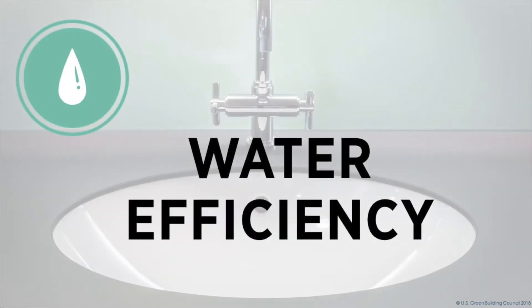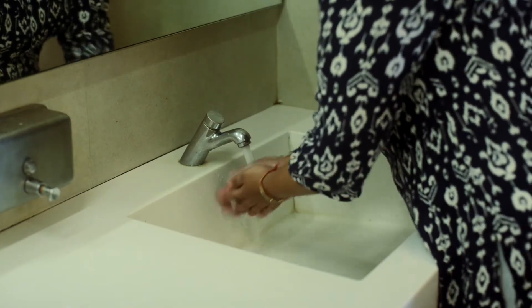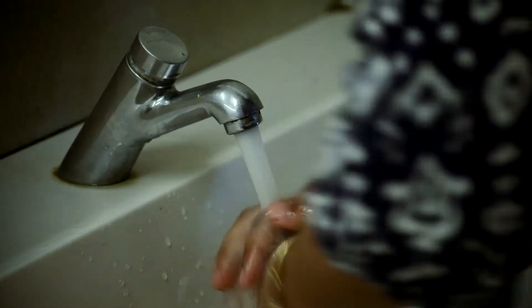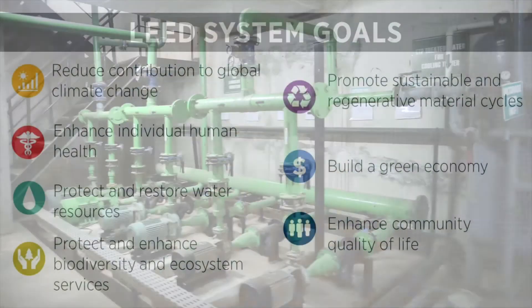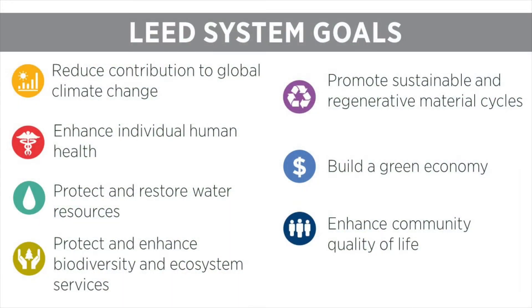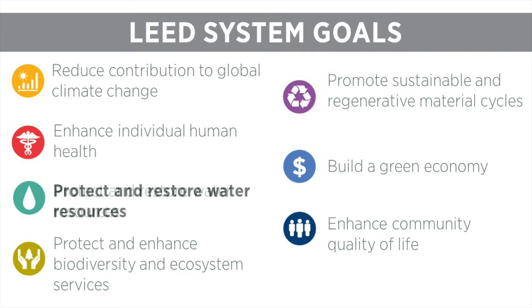The Water Efficiency Credit Category in LEED v4.1 for existing buildings aims to reduce potable water consumption. LEED's system goals explain what LEED aims to achieve. The concepts within the Water Efficiency Credit Category touch on many of these goals, but obviously focus most directly on protecting and restoring water resources.